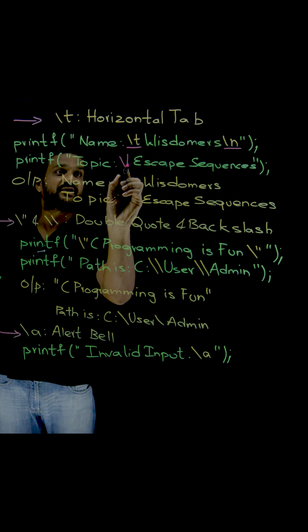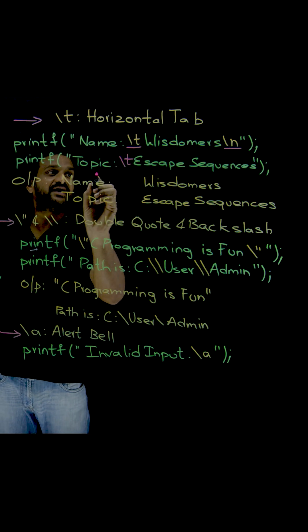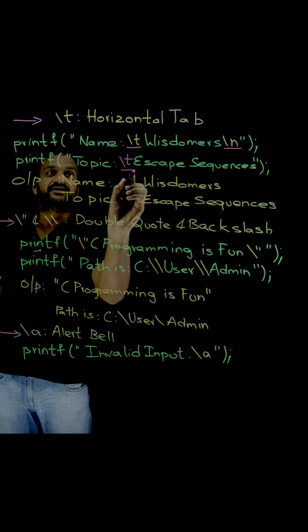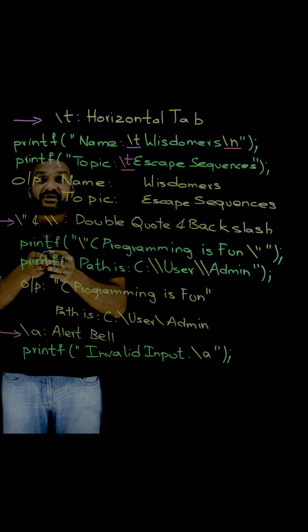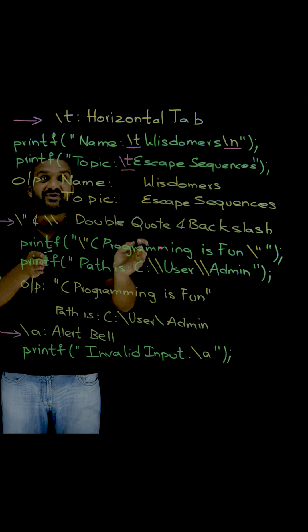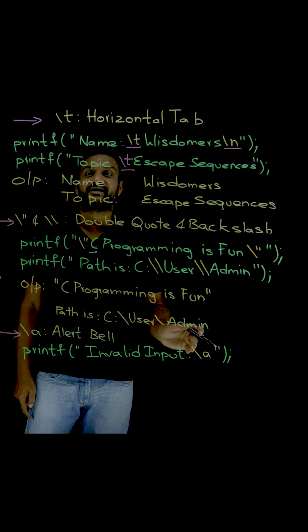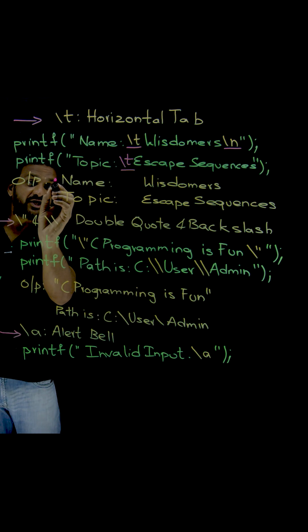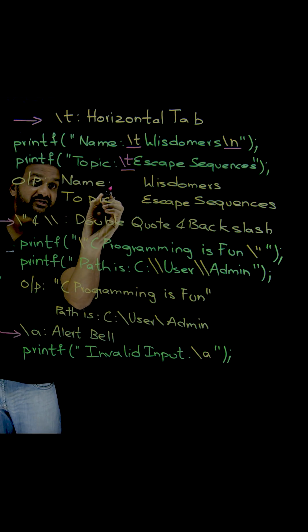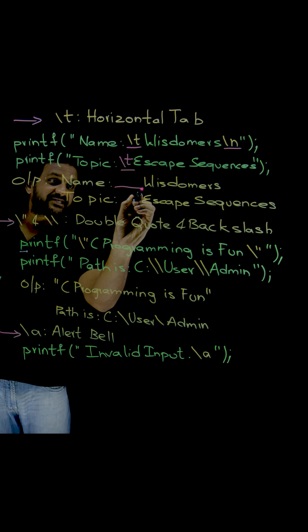Sorry, I forgot here. This slash t has been used here, and by using this slash t, I am expecting a tab space. Let's see the output, how it is getting printed. This is how the output is getting printed here: name, and after that colon, some tab space has been provided.